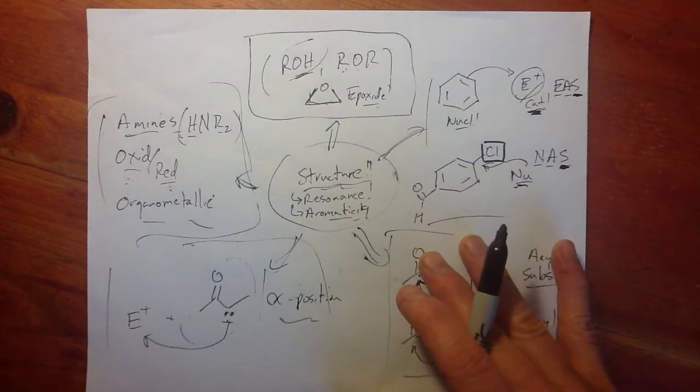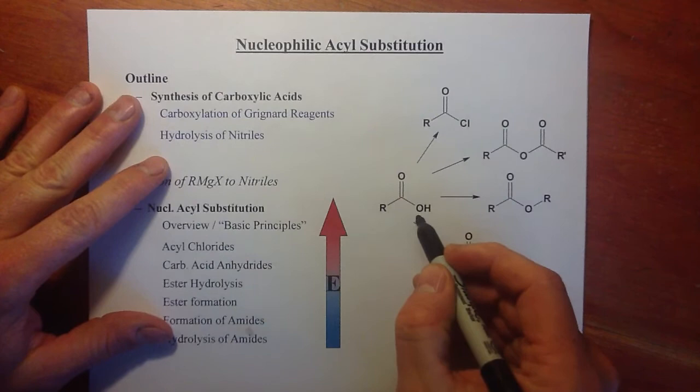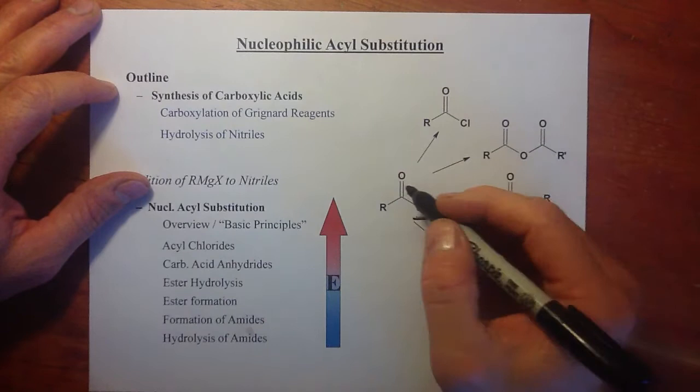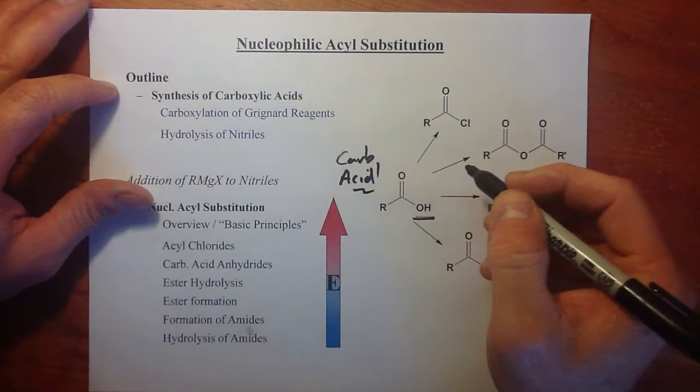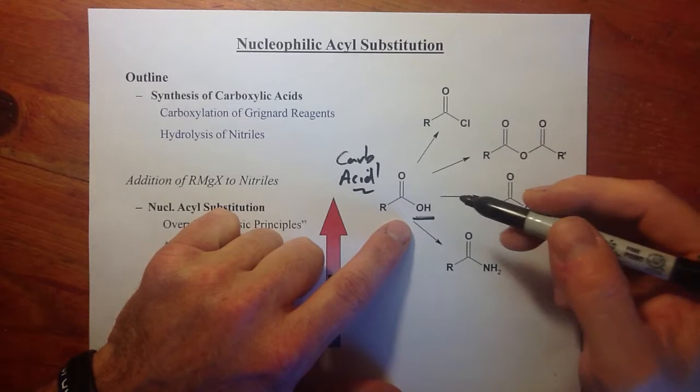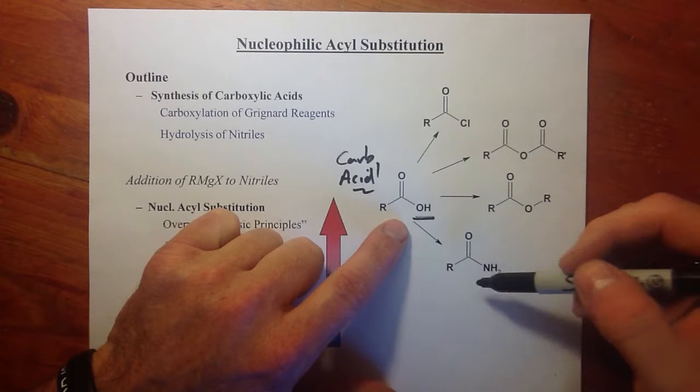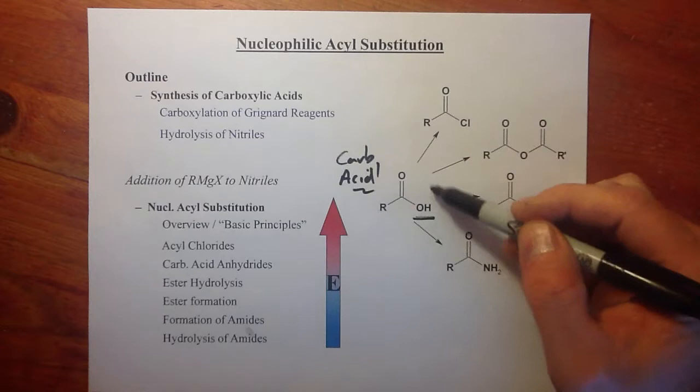In this first video I'd like to discuss how we make class one carbonyls — a carbonyl that has a leaving group off of it. We're going to talk about the formation of carboxylic acid, because if I can make carboxylic acid I can make all the derivative class one carbonyls. I can make all the acyl halides, anhydrides, esters, and amines if I know how to make a carboxylic acid.